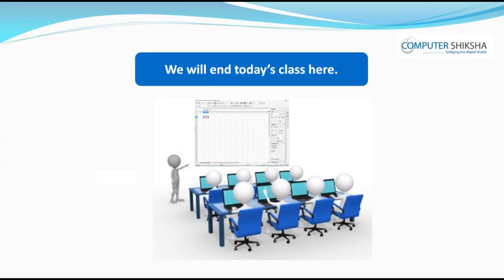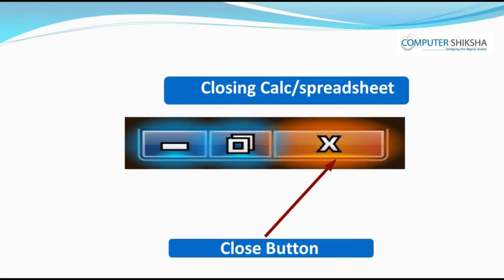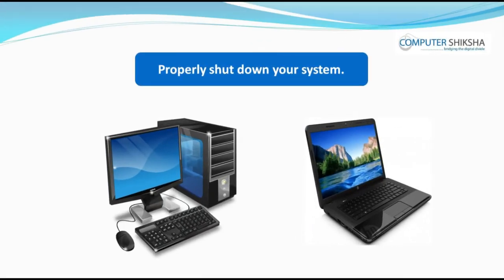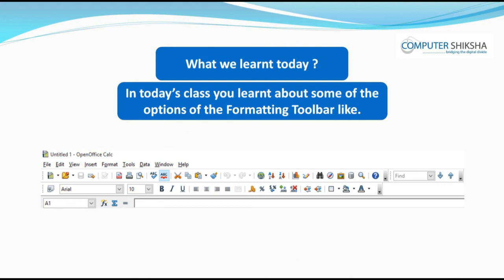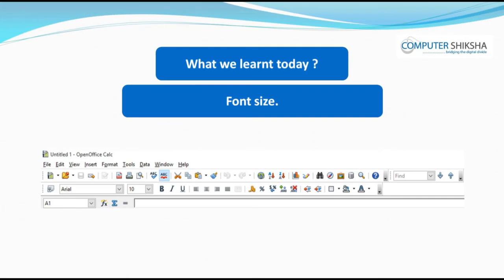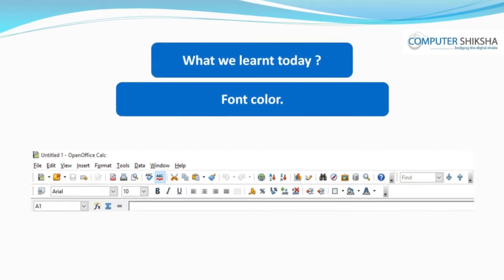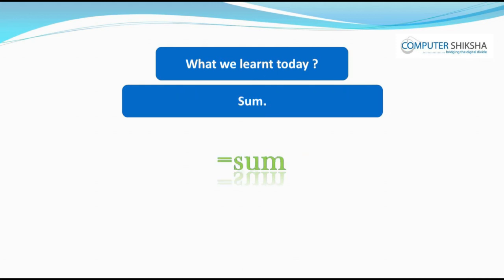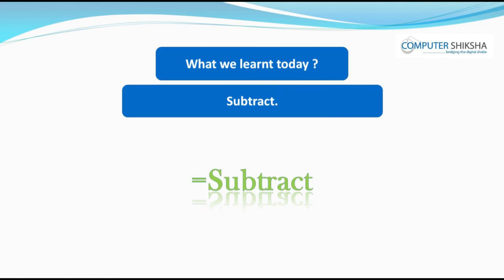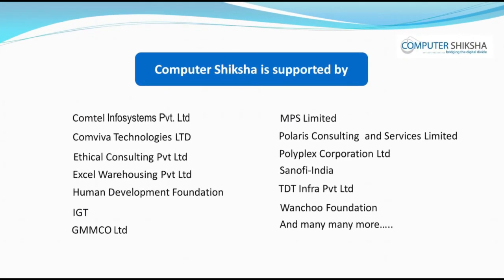We will end today's class here. Go ahead and close your file and then properly shut down your computer. In today's class, you learnt about some of the options of the formatting toolbar like font name, font size, bold, italic, underline, alignment, border, and font color. Towards the end, you also revised the formulas for sum, multiply, subtract, and division. Thank you.